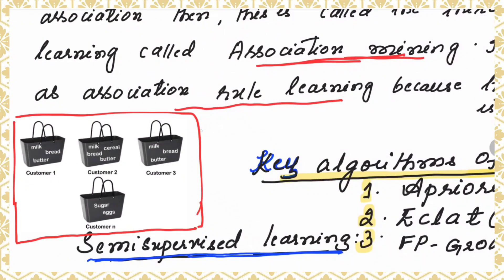To understand this concept, consider this example. A particular supermarket wants to always keep stock of items which are frequently sold together. To know which items to stock more, you feed the complete dataset of customers. When customers try to buy milk, they also buy bread and butter. When you give the dataset with all the items the customers are buying, the algorithm will learn from this dataset and find an association between the different attributes — the items that are purchased.